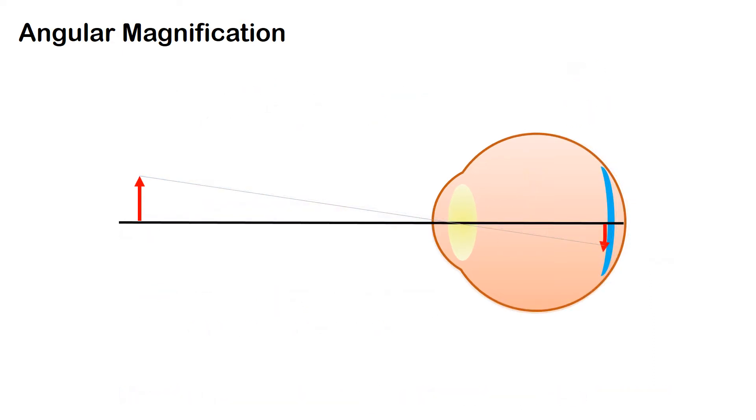This is where a lens comes in useful. We keep our lens very close to the eye and move the object towards the lens.